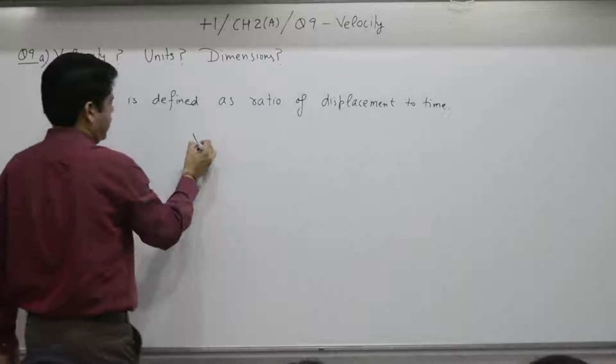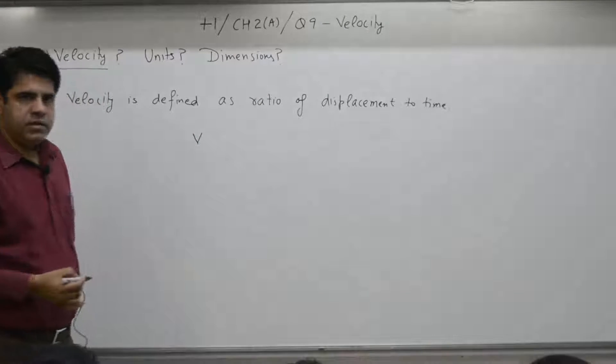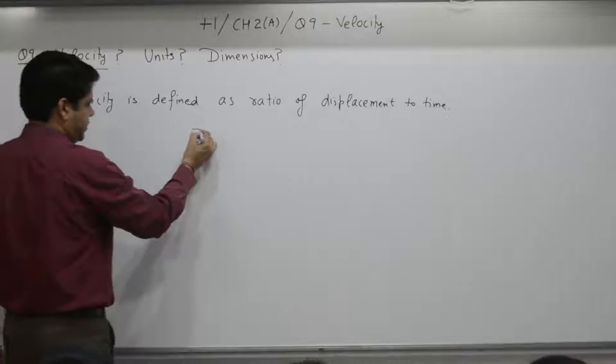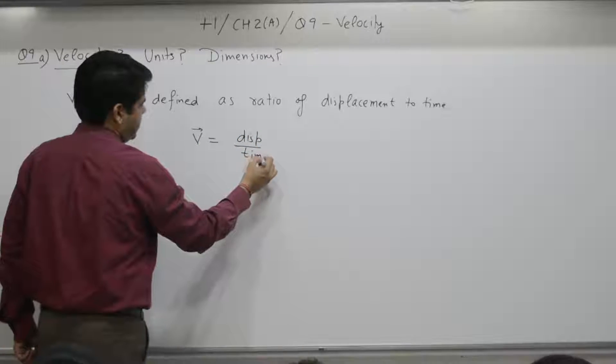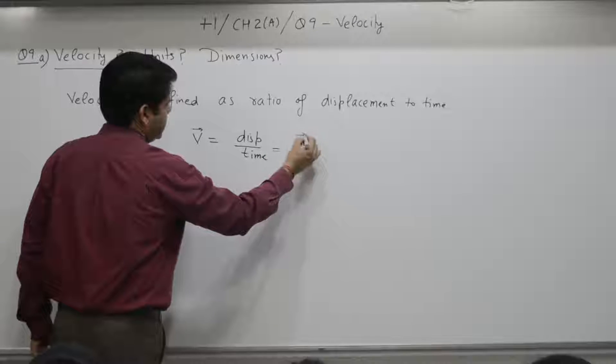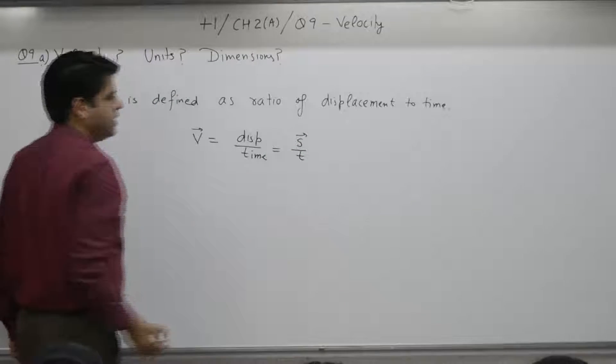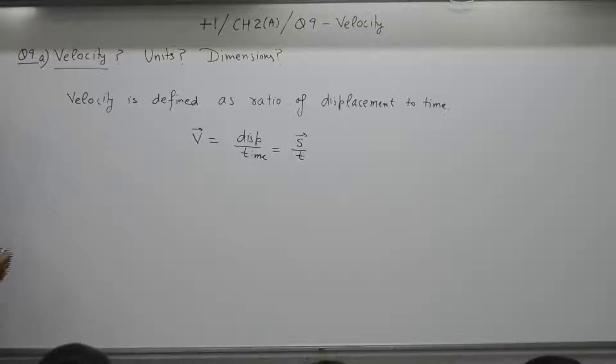So velocity, scalar or vector? Velocity is a vector quantity. It is equal to displacement over time. If displacement is represented by s, t by time, then s by t.